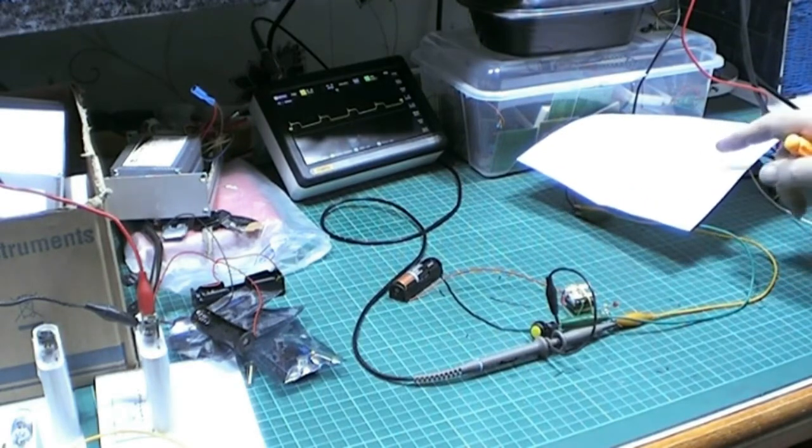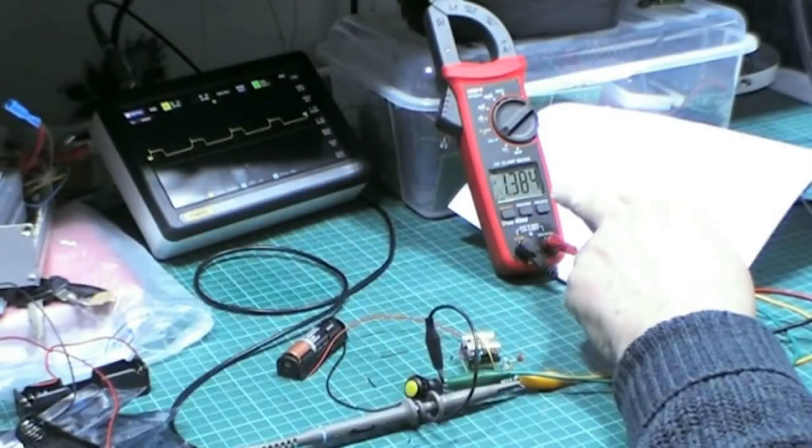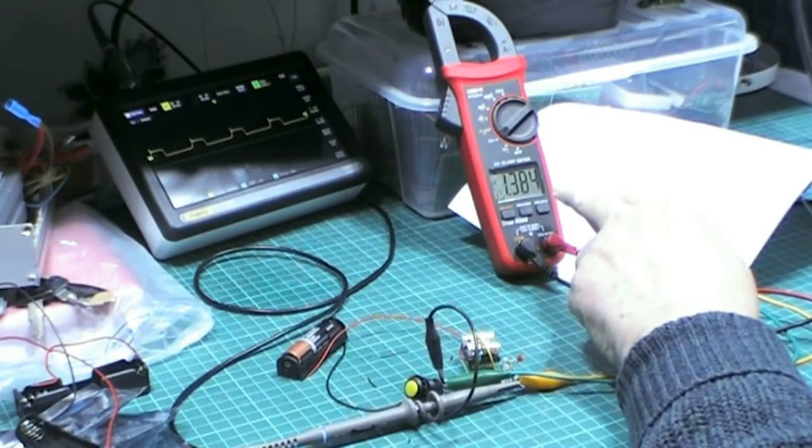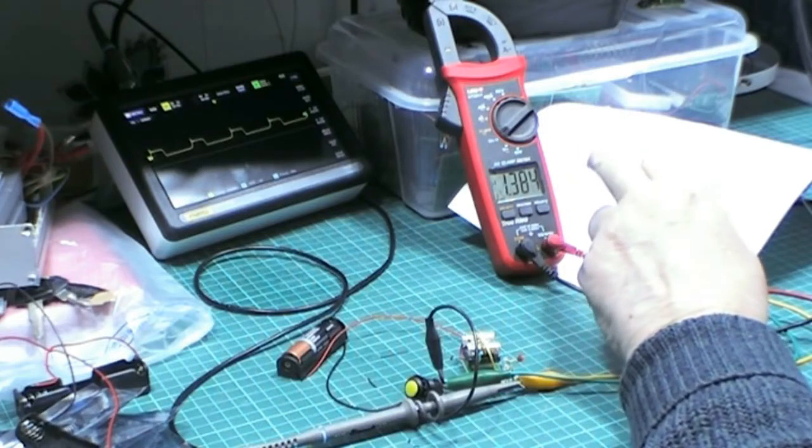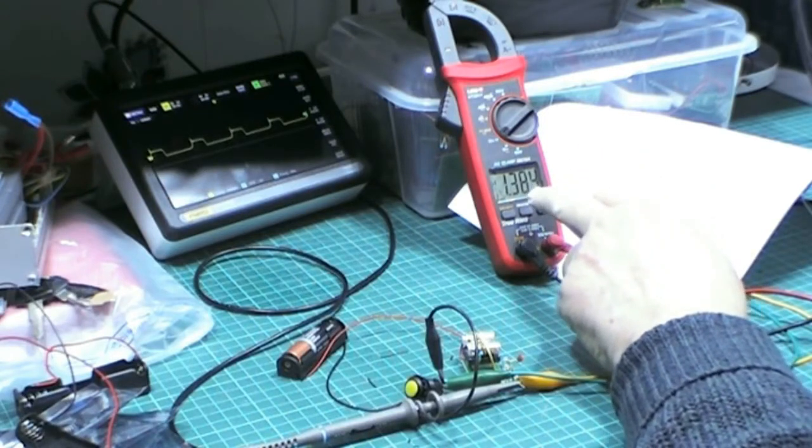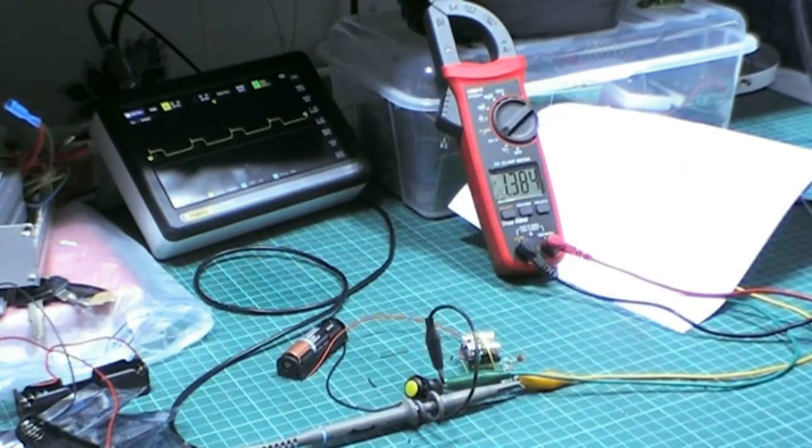Underneath here is Ryan. Now what I want to show you is 8.4V. Now what I'm going to do is I'm going to short the output of Ryan. So you'll see this voltage drop but the waveform stays steady.